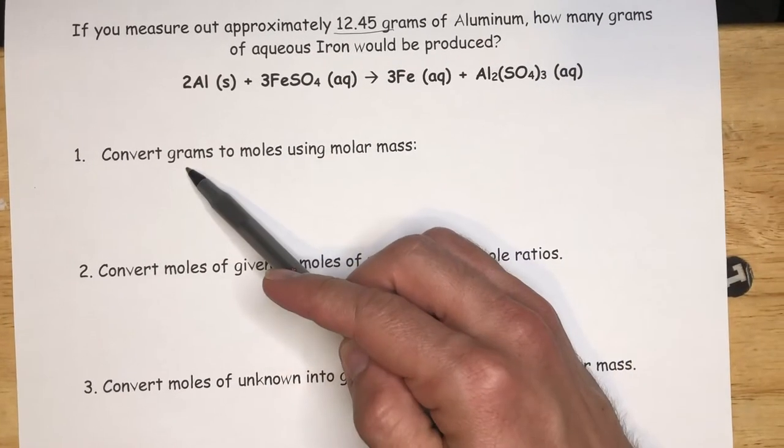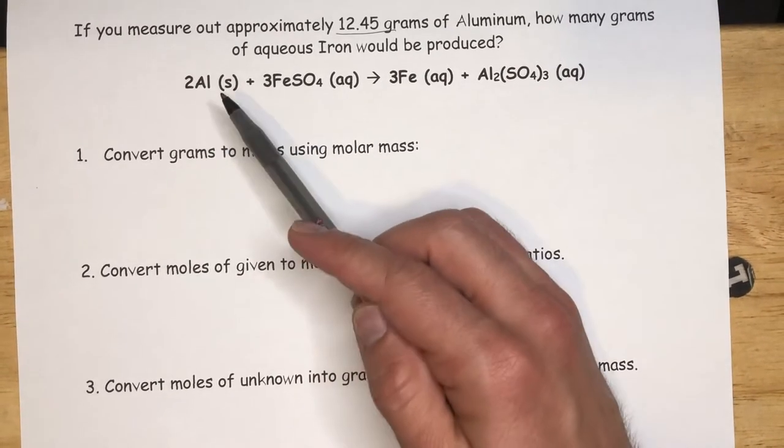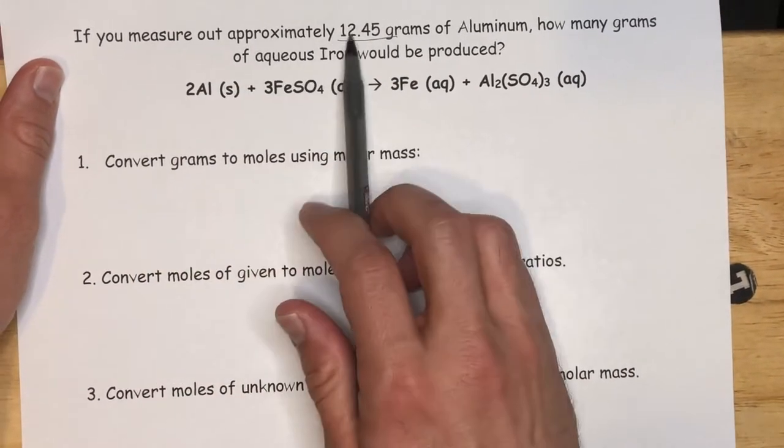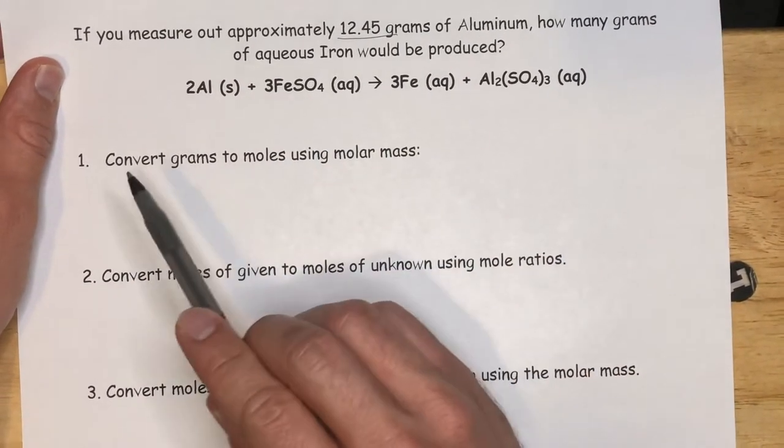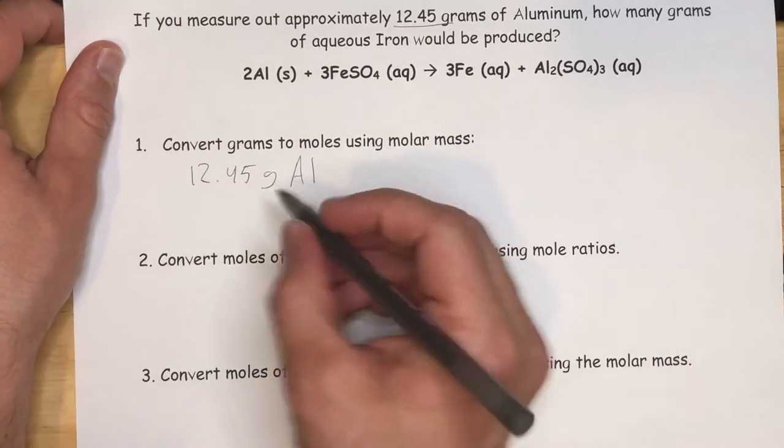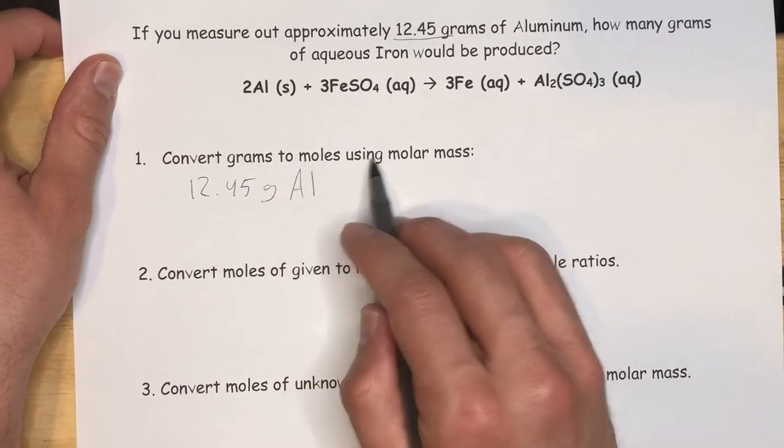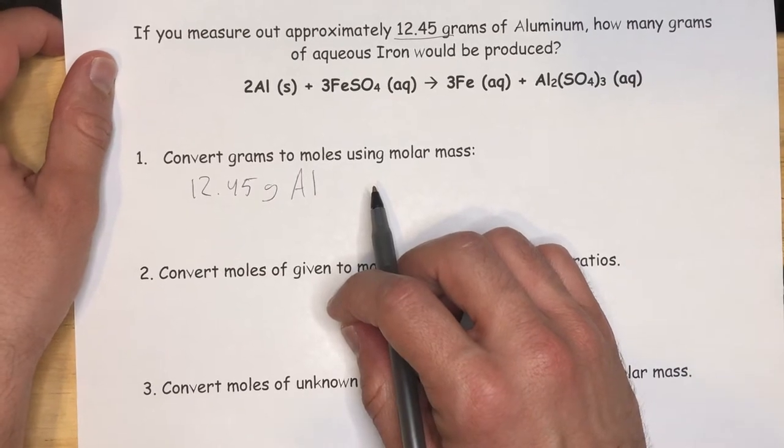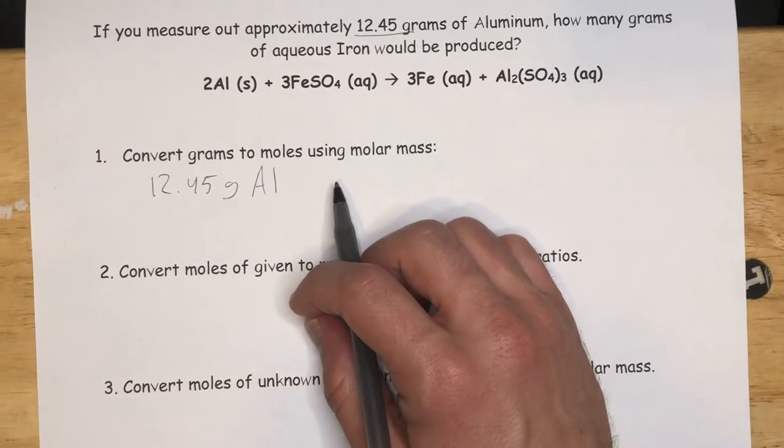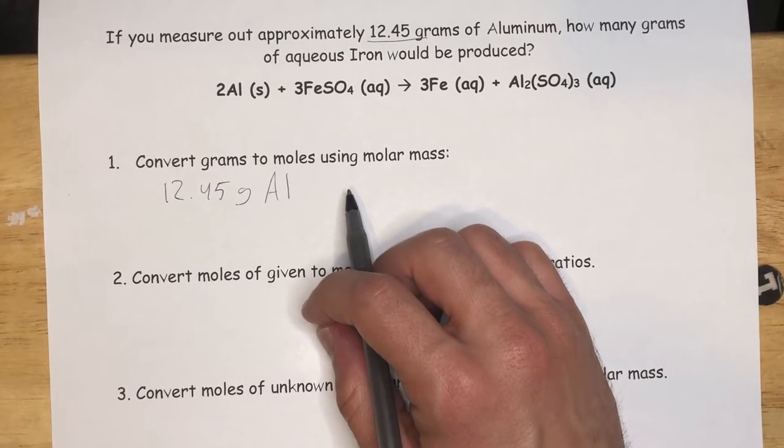The first step says convert grams to moles using molar mass. Well, what grams are we talking about? Convert grams, where does that come from? It's going to come from the question. The question's always going to have to give you some kind of starting amount. So if you measure out approximately 12.45 grams of aluminum, that's our grams from step one. I'm going to write Al because it's a symbol for aluminum on the periodic table. Let's first go to the periodic table and find the molar mass of aluminum.